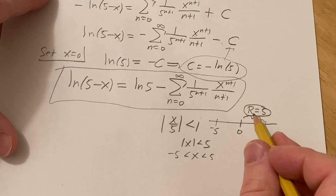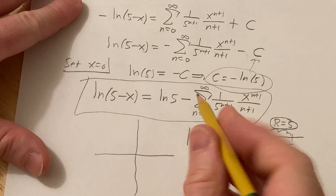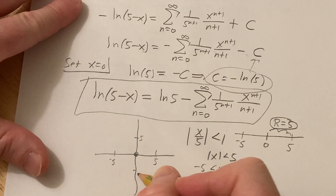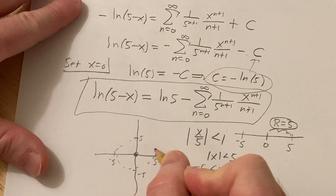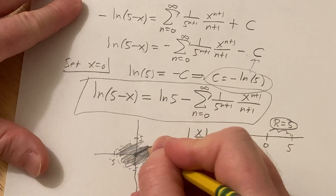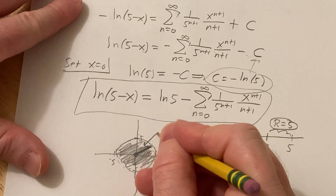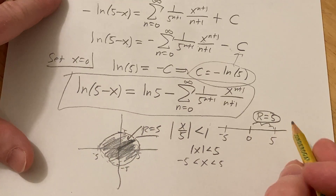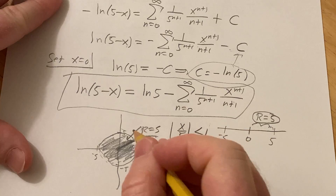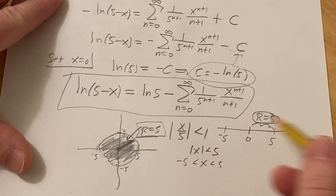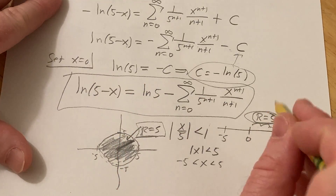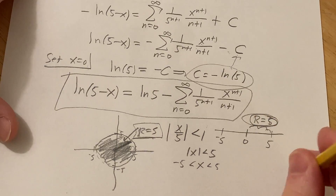The reason it's called a radius is because if you look at infinite series in the complex plane, instead of an interval it's actually a circle — things converge in an open disk. So it's an actual radius in complex variables. In Calc 2 you have intervals, but we still call it the radius of convergence because in higher dimensions, specifically complex variables, it is a true radius. Good luck!